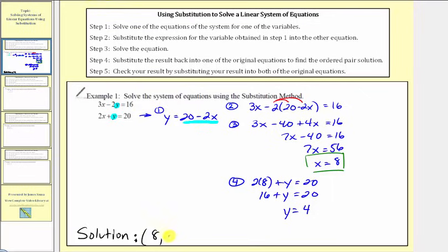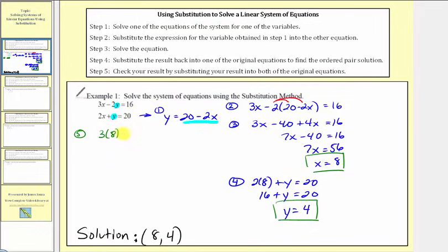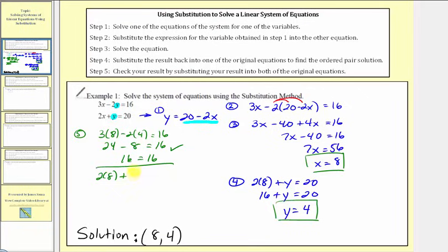So our ordered pair solution is (8, 4). Step 5 says check the result in both of the original equations. We'll substitute 8 for x and 4 for y in both equations. For the first equation, we have 3 times 8 minus 2 times 4 equals 16, so 24 minus 8 equals 16, which checks. And for the second equation, we would have 2 times 8 plus 4 equals 20, giving us 16 plus 4 equals 20, which also checks.